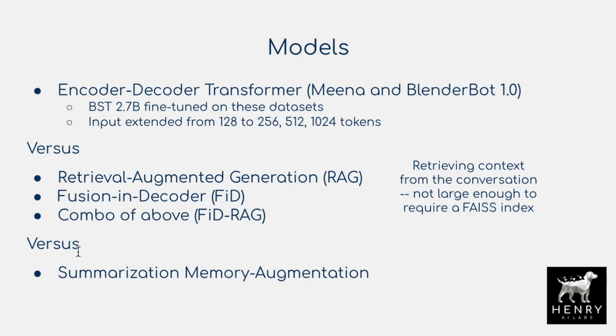Compared to those baselines, the more interesting approaches are retrieval-based. With retrieval information retrieval models, the approach is to return snippets or utterances from the previous conversation using something like dense passage retrieval — a Siamese encoder network that turns a previous utterance into a vector representation and matches the similarity of the current context against all previously encoded utterances. The retrieval augmented generation model and the fusion-in-decoder have two different strategies for encoding those returned documents. There's also a combo where you use the fusion-in-decoder architecture but update the retrieval encoder using the RAG strategy.